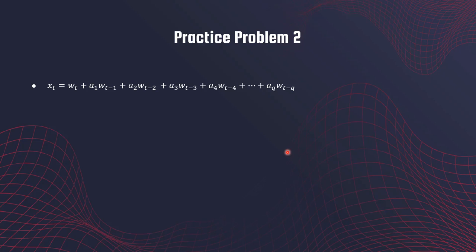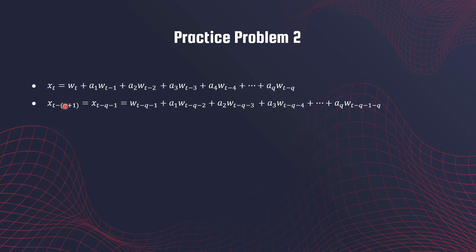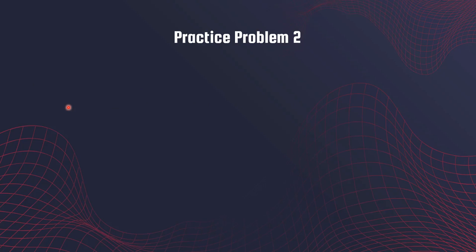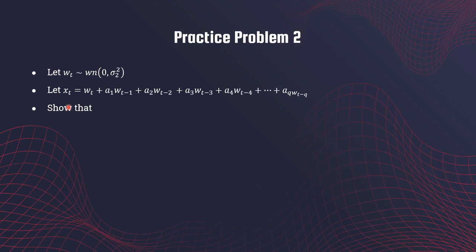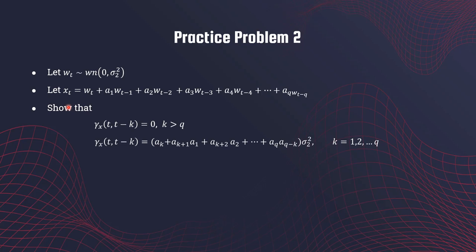Consider x_{t-(q+1)}, which means going back more than q steps. We want to show that the covariance between x_t and x_{t-(q+1)} is zero. Before showing any general result like this, it is a good idea to take a few specific numbers and do some calculations to get a feel of how the calculations evolve.